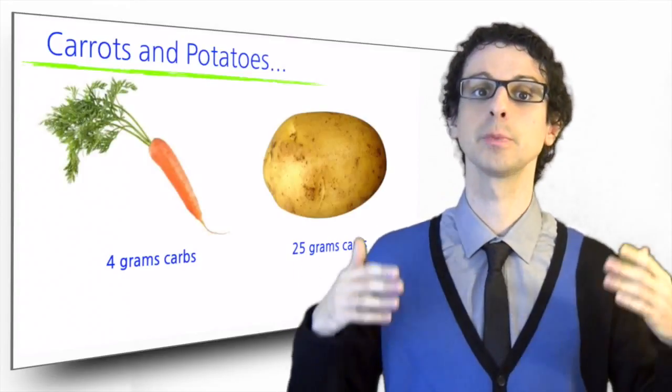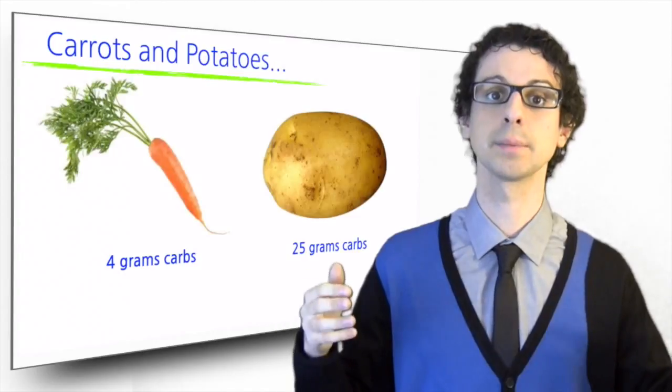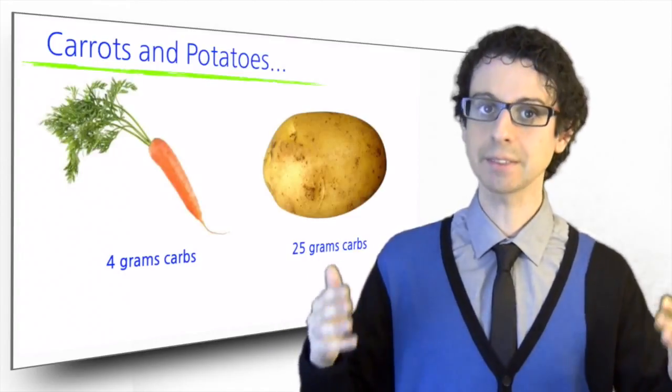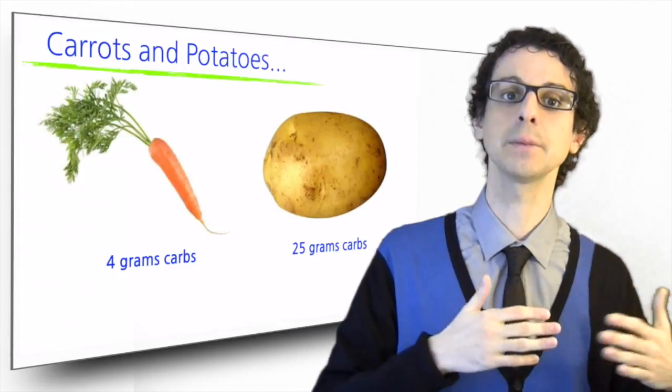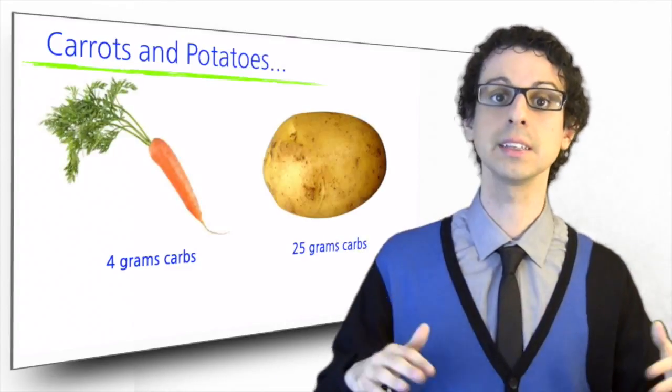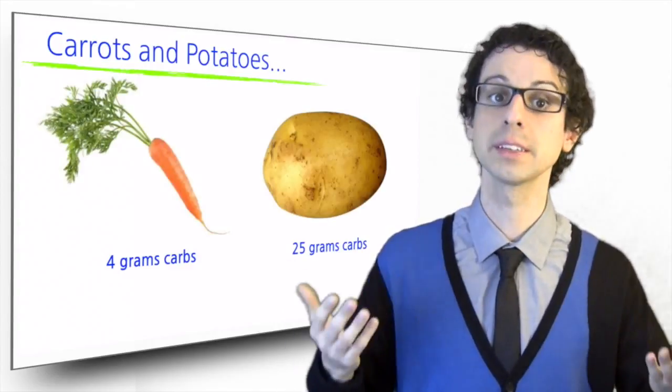Conversely, the glycemic index of potatoes is lower than that of carrots, but while an average carrot has about 4 grams of carbs, an average potato has about 25 grams. So even if these carbs are absorbed more slowly, they still have a significant effect on blood glucose and insulin, because they are a lot.